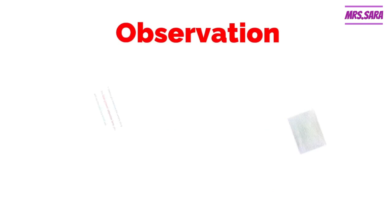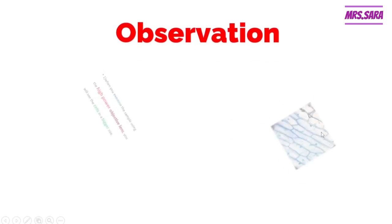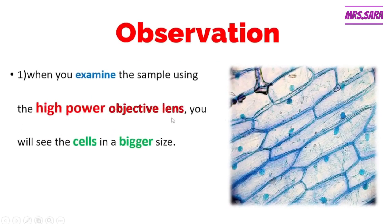What will you see, Primary Six? If you use the low power objective lens, you will see the cells in a small size. But if you use the high power objective lens, you will see the cells in a bigger size.